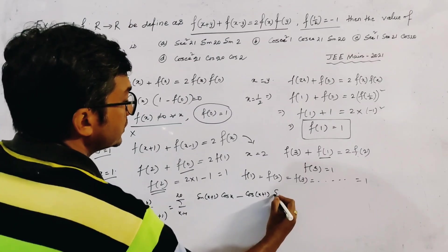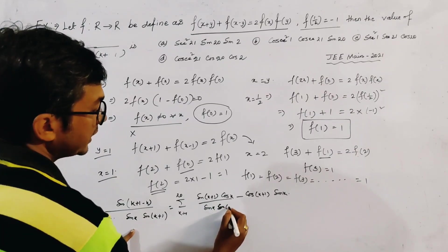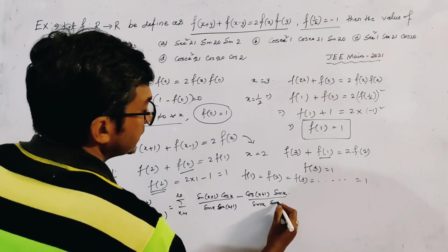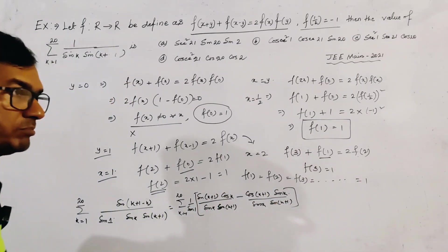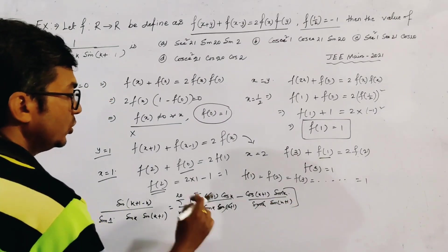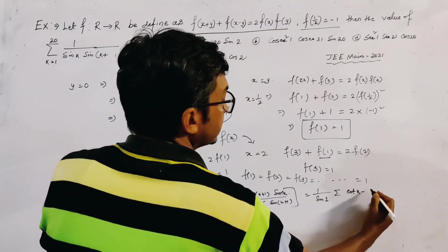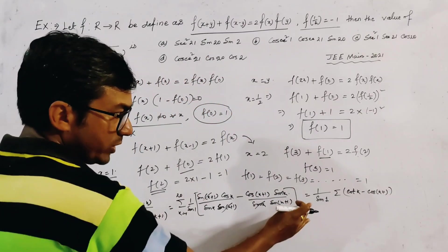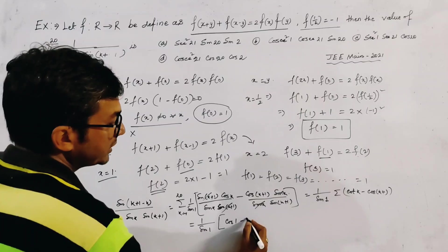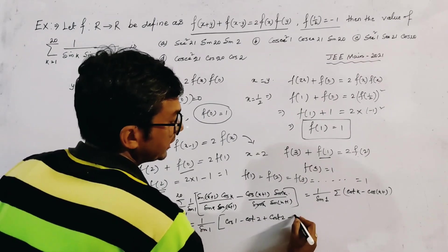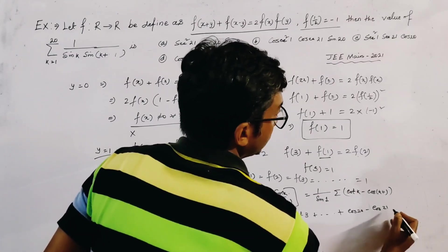So the expression becomes (1/sin1)·∑[sin(k+1)·cos(k) - cos(k+1)·sin(k)] / [sin(k)·sin(k+1)], which simplifies to (1/sin1)·∑[cot(k) - cot(k+1)]. This is a telescoping series expanding as (1/sin1)·(cot1 - cot2 + cot2 - cot3 + ... - cot21).